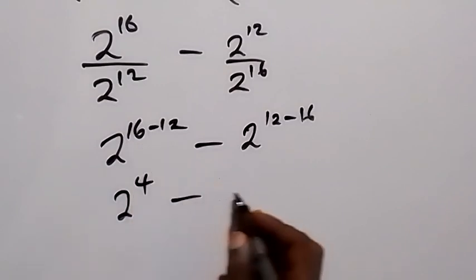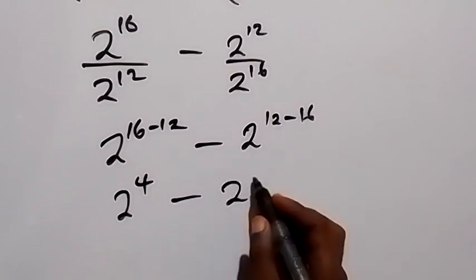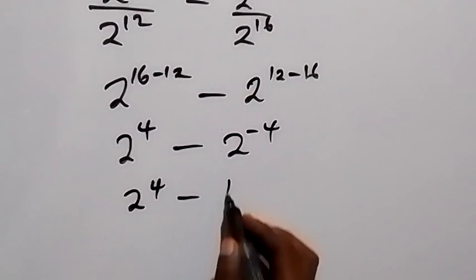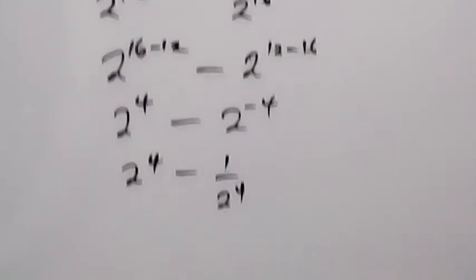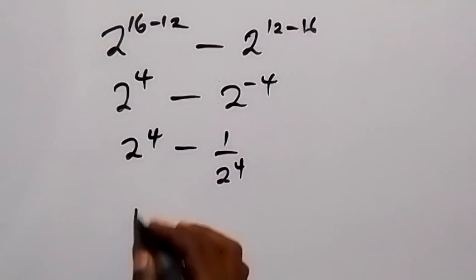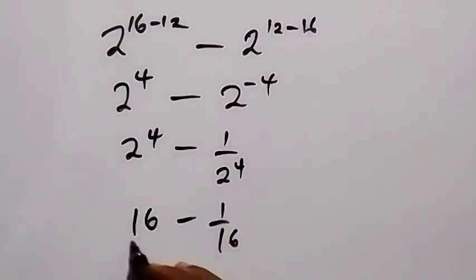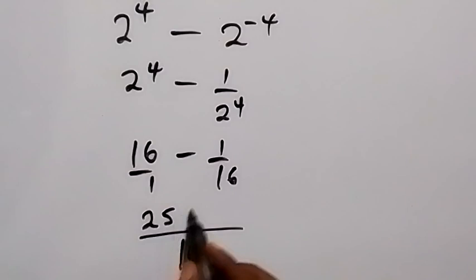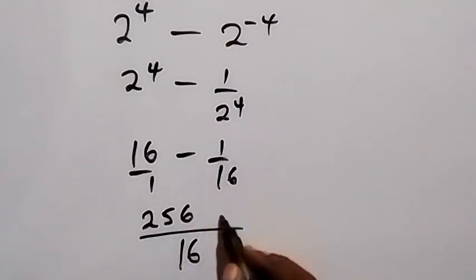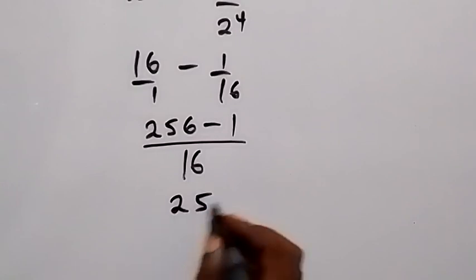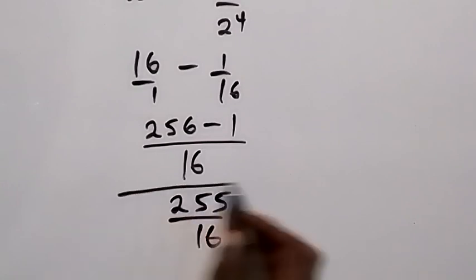This becomes 2 raised to power 4, then minus 2 raised to power 12 minus 16, that's 2 raised to power minus 4. Here we have a negative power, so we can say this is 2 raised to power 4 minus 1 over 2 raised to power 4, which equals 16 minus 1 over 16. Bringing them together with the common denominator of 16: 16 times 16 is 256, minus 1 times 1 is 1, so 256 minus 1 gives us 255 over 16, which is the same answer as before.